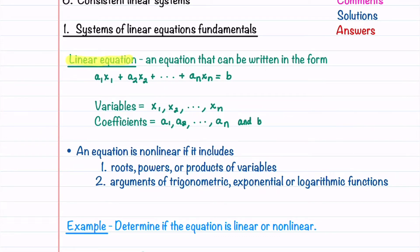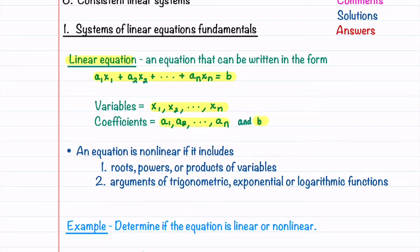A linear equation is an equation that can be written in the form a1x1 plus a2x2, all the way up to anxn, equal to b. The variables are x1, x2, through xn, and the coefficients are a1 through an and b on the right-hand side. The coefficients can be either real or complex numbers. To understand linear equations better, it's helpful to learn what terms may appear in a nonlinear equation. A nonlinear equation may have roots, powers, or products of variables.